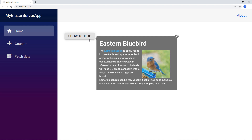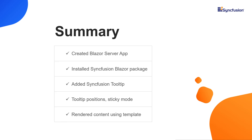If you need more information about the Syncfusion Blazor tooltip component, you can refer to our online documentation — a link is provided in the description of this video. Let me summarize the main points: I explained the steps to create a Blazor server application and add the Syncfusion Blazor package, how to add the tooltip component, tooltip positioning, sticky mode, and how to render tooltip content using an HTML template. You can download this working example from the GitHub link in the video description. You can also find information about getting a free license key if you are eligible for the community license.